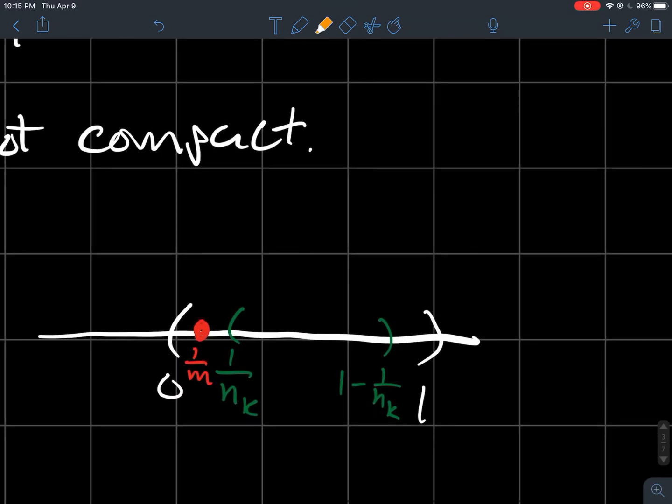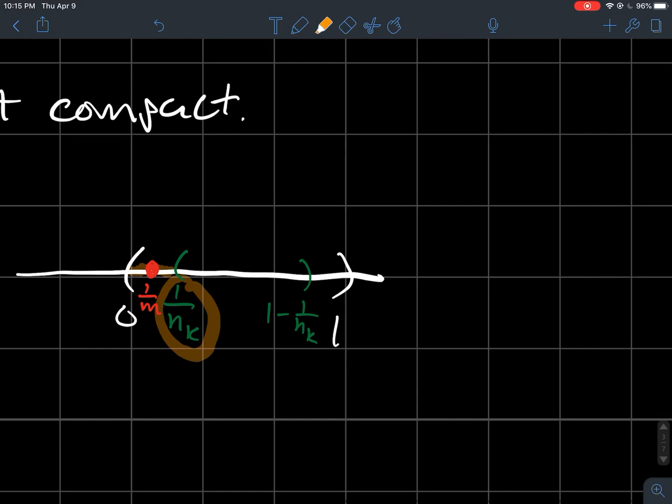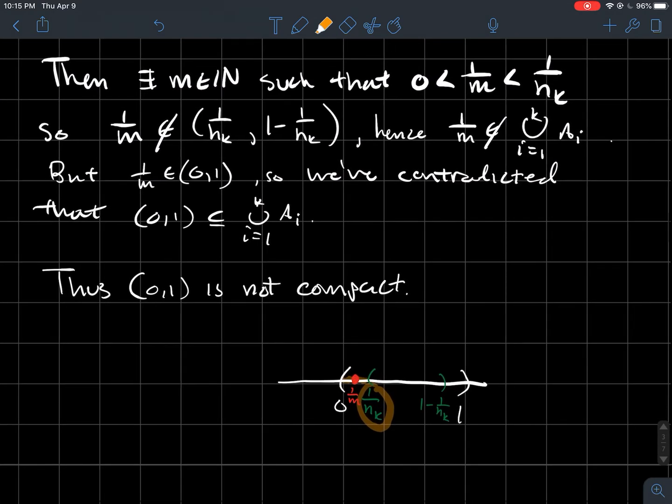So 0, 1 is not compact. And down here what I'm saying is, if you assume that 1 over n_k is the farthest left you go, you've got some space there between 0 and 1 over n_k. The point is that can always happen. There's no way, there's no one number here where that will be the farthest left that I go. I'm always going to have some space in between where I can make an argument like I did. That convinces us that there's no finite number of these green-looking sets that will cover that whole interval from 0 to 1.